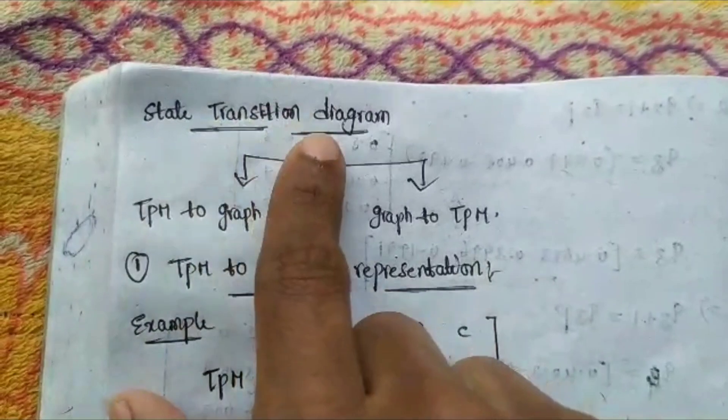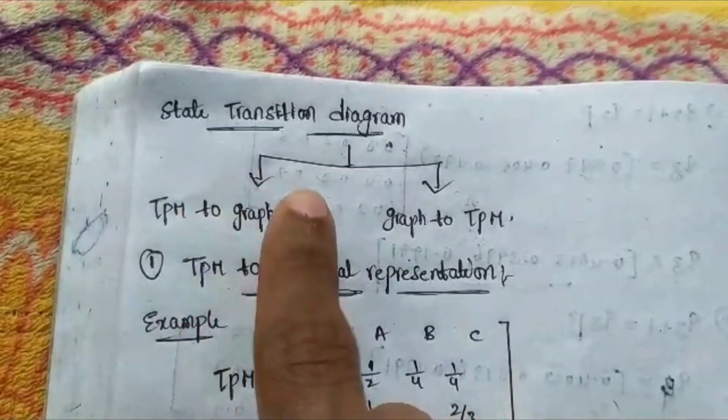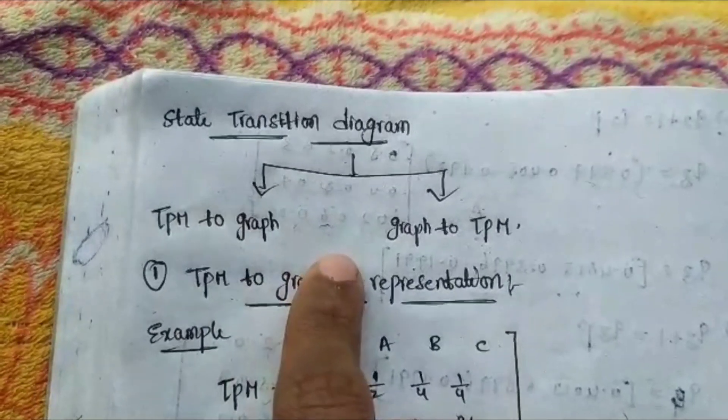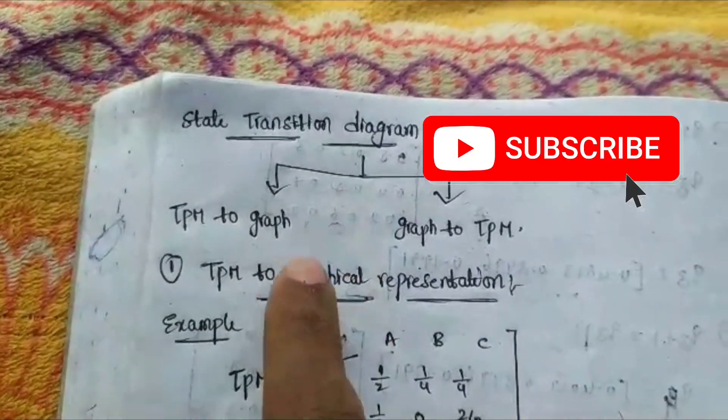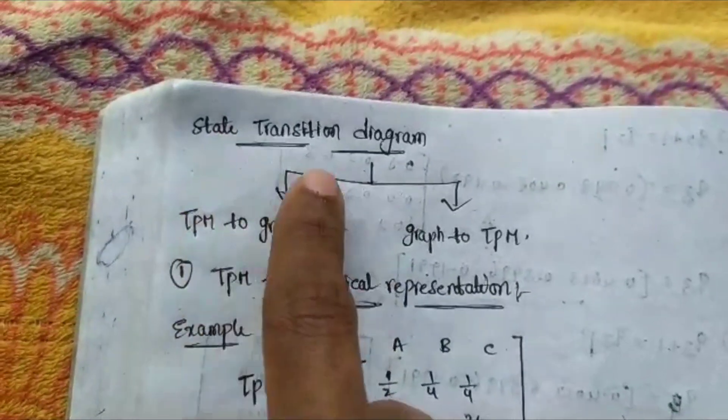The next topic is state transition diagram. It is not the most important topic, but in the recent R20 regular exam this topic was given, so I will be explaining this to you.